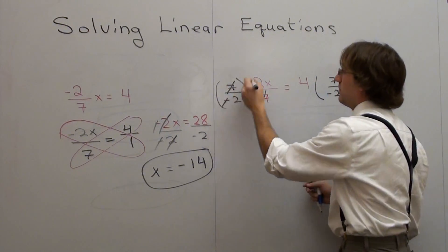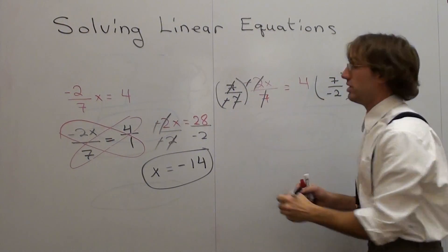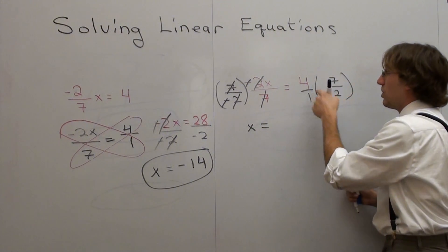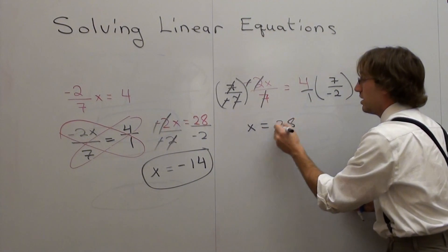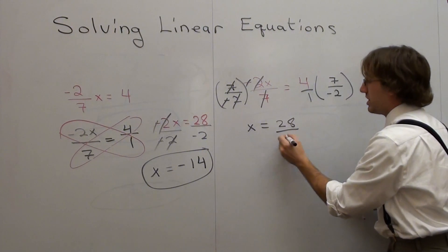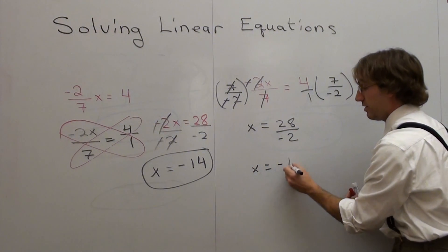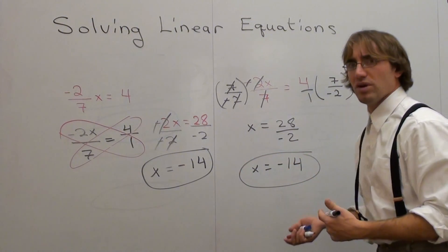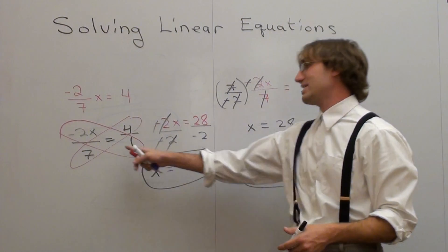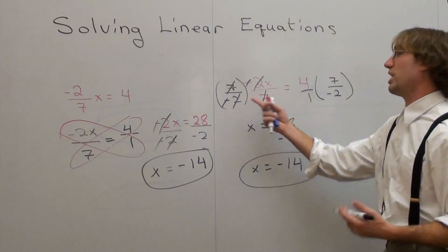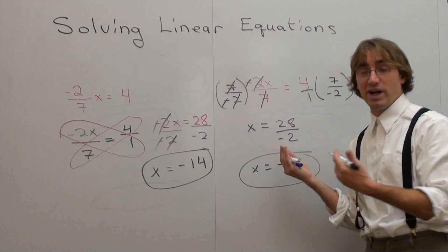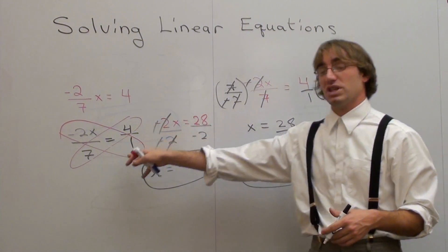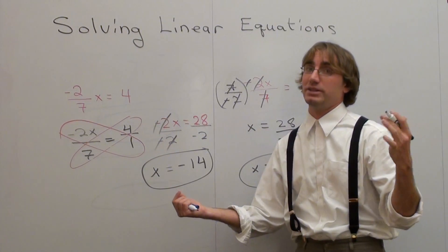7s cancel, negatives cancel, 2s cancel. And I'm left with x equals 4 over 1 times 7 over negative 2. That's 4 times 7 is 28. 1 times negative 2 is negative 2. x equals negative 14. Same answer, different kind of approach. Like I said, most students prefer this in the long run. I do have students who like the reciprocal property too, which is still why I show it. But when I end up teaching concepts later on, especially when you see these problems again, I'm just going to cross multiply them. That's how I like to do it.